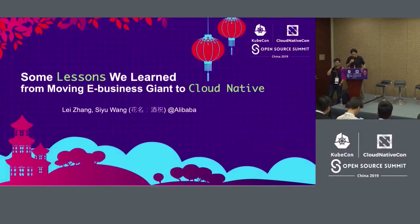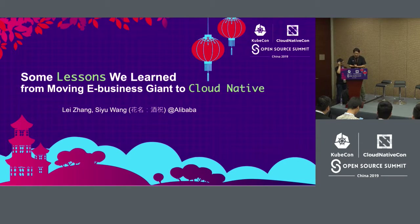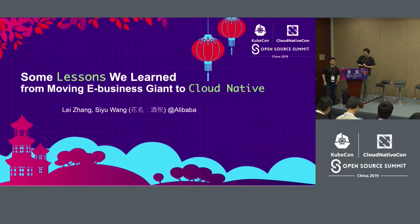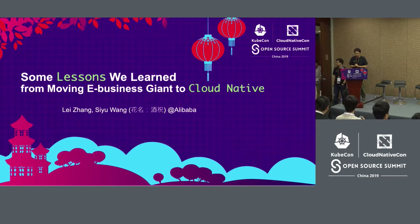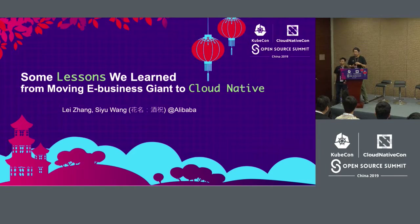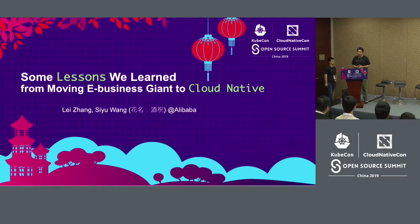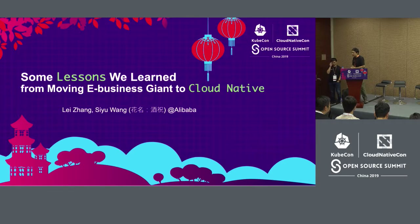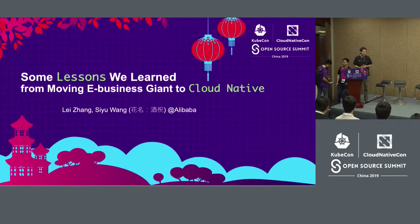Thank you for attending this talk. Today we are discussing some interesting stuff. The topic is from Alibaba's internal best practices. We will tell the story about how, in the past two years, Alibaba Group moved from an in-house container program to cloud-native architecture — which is Kubernetes — and how we addressed large-scale migration issues.